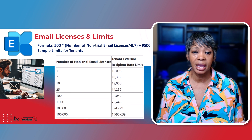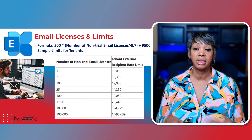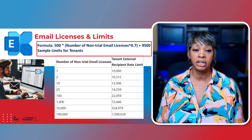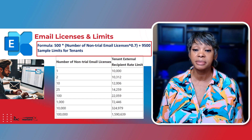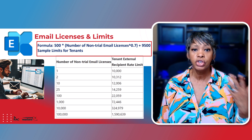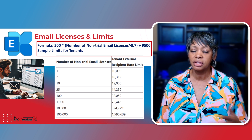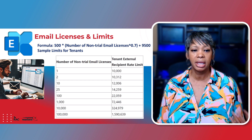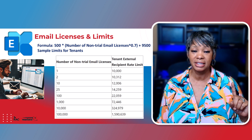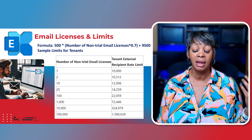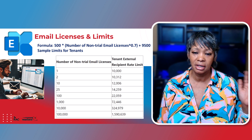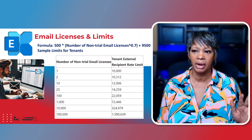Microsoft calculates the limits based on the number of licenses you have. The formula is 500 times the number of licenses plus 9,500. As you can see on the screen, you do get quite a lot, so you may not have to worry. But if you're a small business with one license and an email list of eight thousand, you should be concerned and think of a plan.